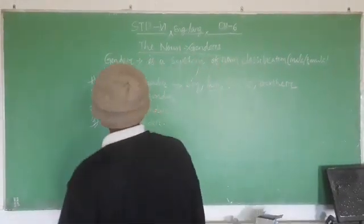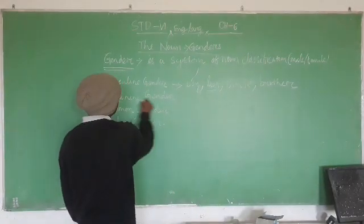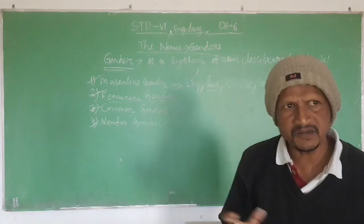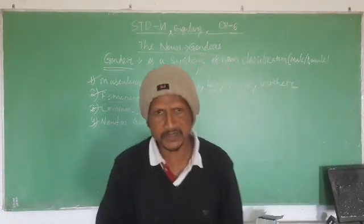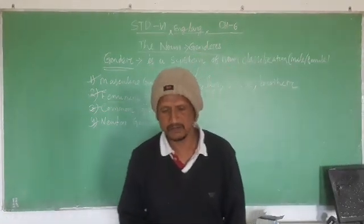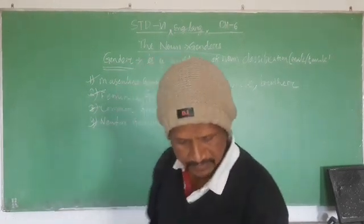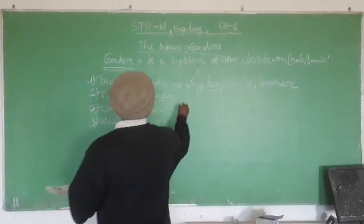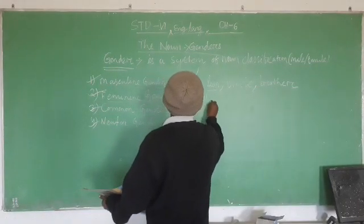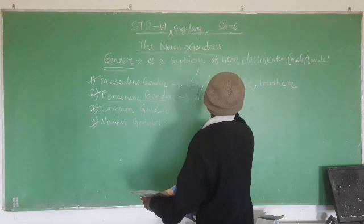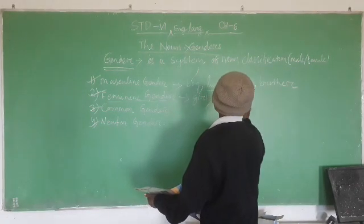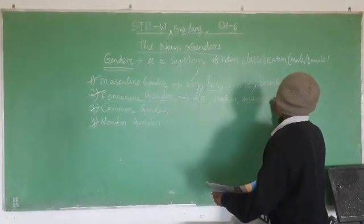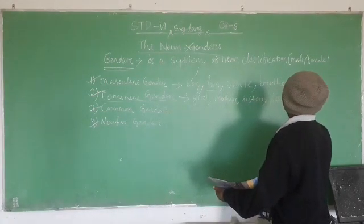Now we will discuss about the feminine gender. It refers to the female living being. That means it may be human beings or animals. Some examples of feminine gender are girl, mother, sister, lioness, etc.